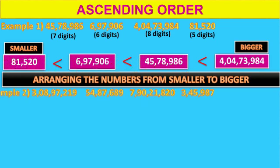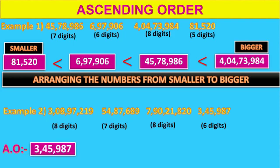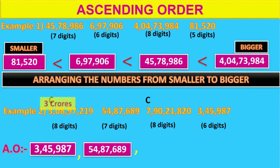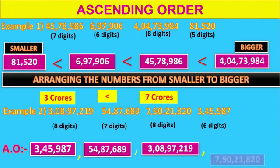In the second example, the numbers have 8 digits, 7 digits, 8 digits, and 6 digits. Which number stands first in ascending order? That is 3,45,987, because it has the fewest digits. In second place, 54,87,689, because it has 7 digits. The remaining two numbers have an equal number of digits. But 3 crore 8,97,219 has 3 crores and 7 crore 90,21,820 has 7 crores. Since 3 crores is smaller than 7 crores, 3 crore 8,97,219 comes in third place and 7 crore 90,21,820 in fourth place.